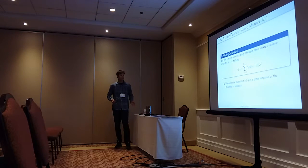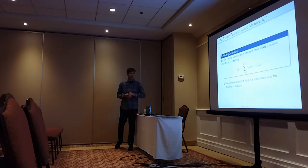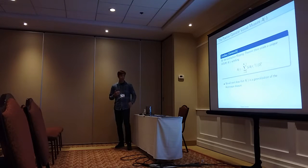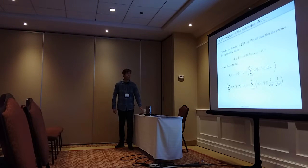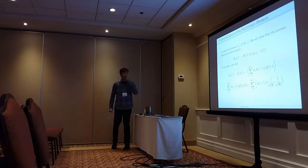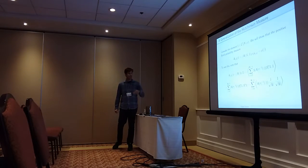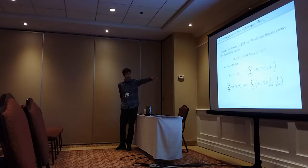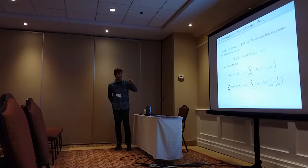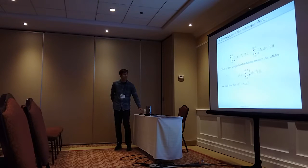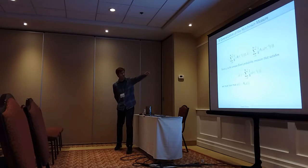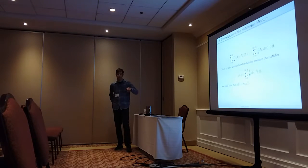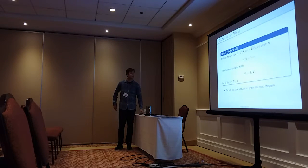As a corollary, there is a unique positive operator value measure A satisfying this fixed point equality, and this is a generalization of the Hutchinson measure. To see why: taking the constant function one in L2(X, mu), we consider the scalar measure A_{11}(·) = ⟨A(·)1, 1⟩. Plugging in the fixed point formula for A, pulling out the sum, applying the formula to the constant one element, and factoring, we find that this scalar measure satisfies exactly the defining relation of mu — so mu equals A_{11}.